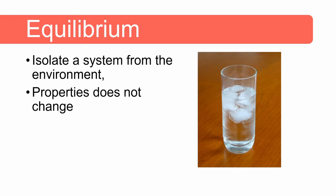When we isolate a system from the environment and its properties do not change with time, we say the system is in equilibrium. Consider a glass of liquid water and solid water or ice. When we add ice cubes to tap water, the temperatures of the ice and water are initially not the same and they are not in equilibrium. Some ice will melt and the temperature of the water will drop. However, if we prevent heat exchange with the environment, the amount of ice will remain constant and the temperature of both will stay the same.